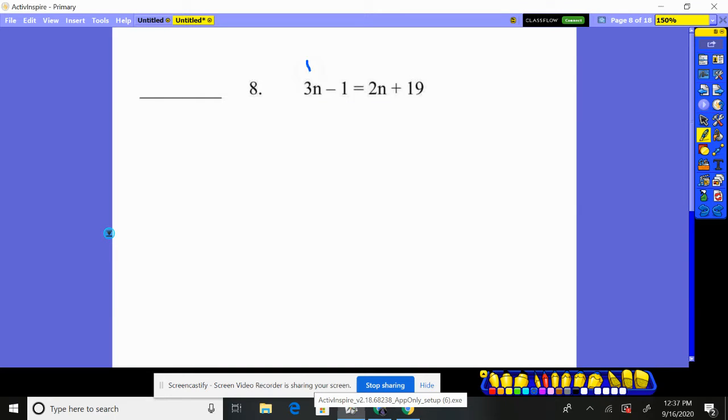Number eight, we have a variable number equals a variable and a number. So let's get all our variables on one side, all our numbers on the other. So basically I'm going to move this variable over here and then move that number over there. The reason I'm going to move that variable, because I see 2n and 3n, and 2n is smaller, so I like to move it first.